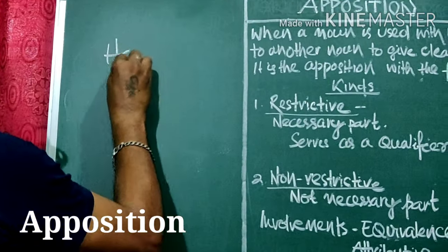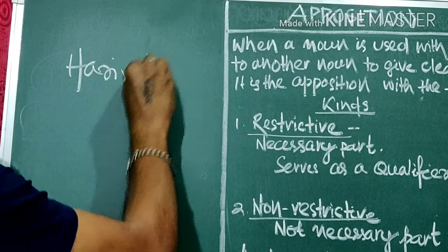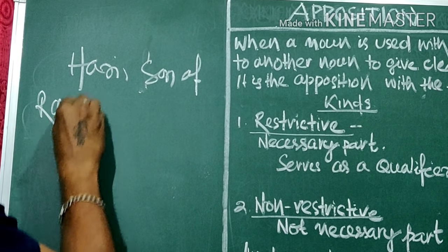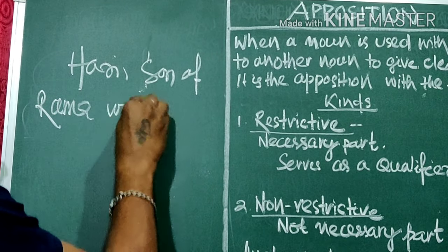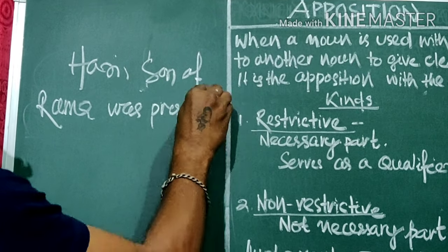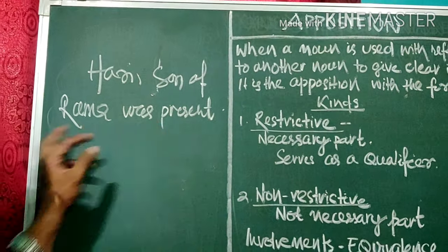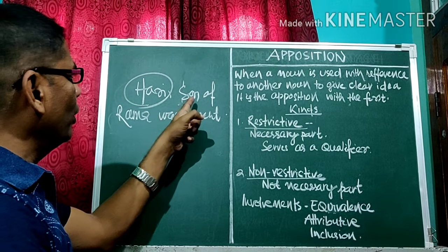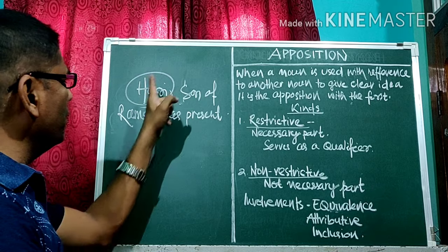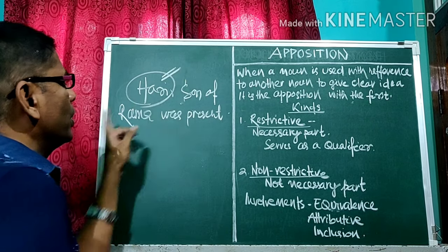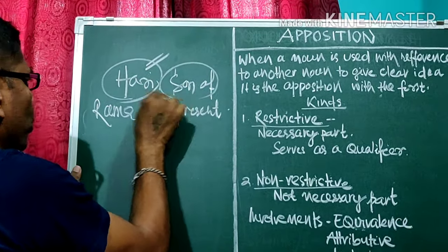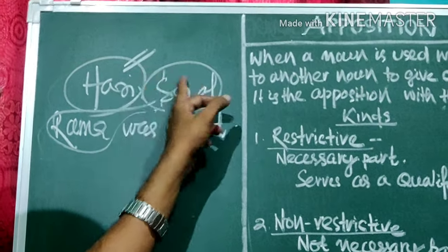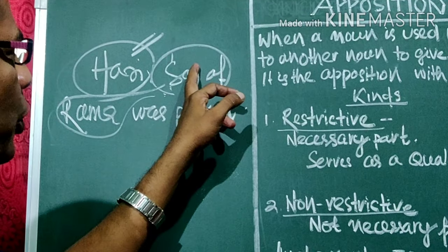Consider: 'Hari, son of Ramo, was present.' Who was present? Hari was present. Who was Hari? Son of Ramo. So 'son of Ramo' gives the clear idea about Hari — it stands side by side with Hari. This is called Apposition.